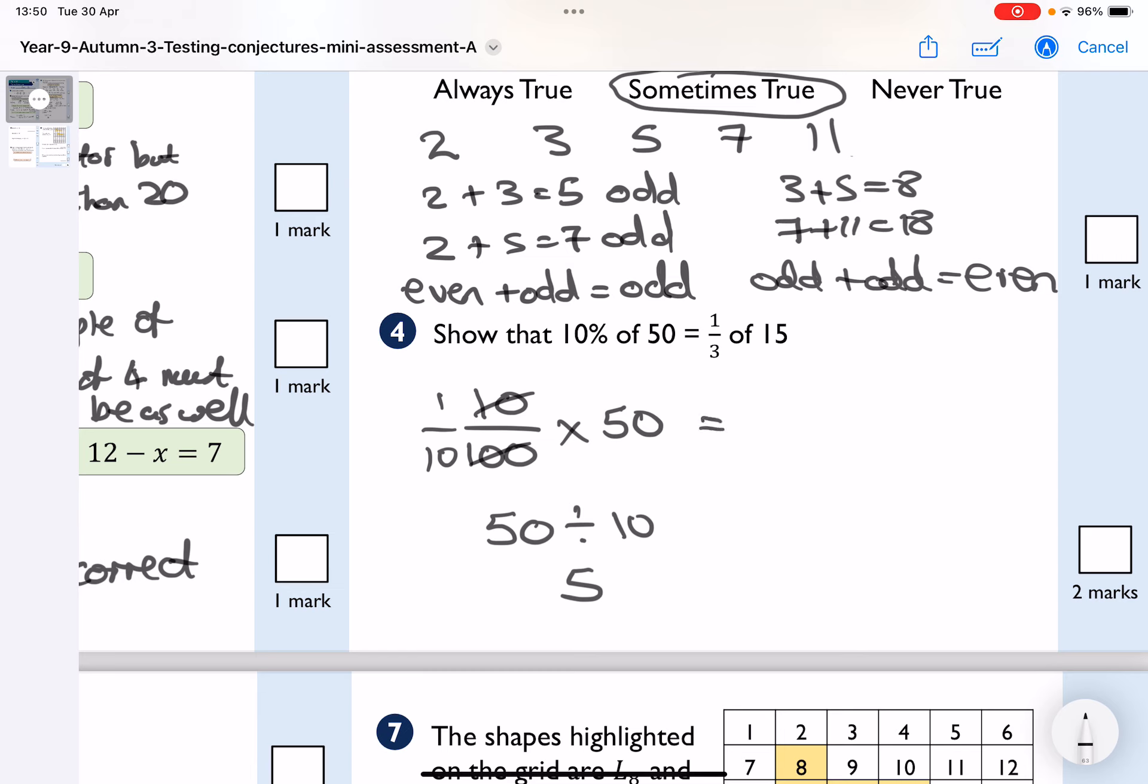Then what we've got, we've got a third of 15, which is a third times 15. If I was working at the third of anything, the first thing I would do is I'd do 15 divided by 3, and then we would multiply by the one on the top. Well, in this case, 15 divided by 3 is 5, multiplied by the 1 is 5. So, in fact, they are both the same.